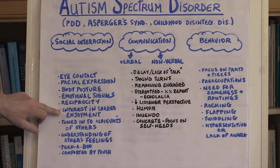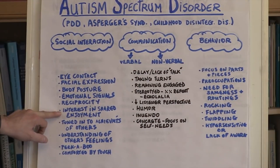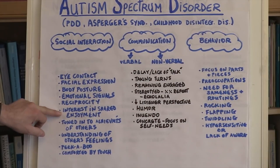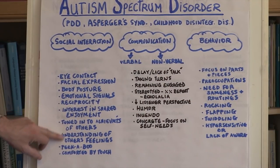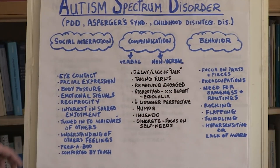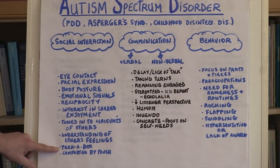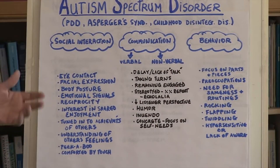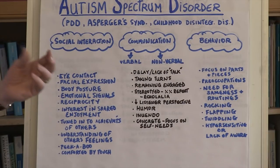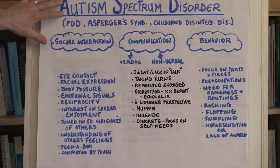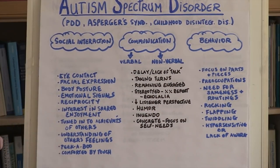Those who have Autism also seem not to have a shared interest in or enjoyment with others. Their experience is a very personal, introspective, solo kind of enjoyment. They are not tuned into the achievements of others and have difficulty understanding other people's feelings. Especially with young children, one of the hallmark early signs of Autism is that they don't engage in social, fun, interactive activities like playing peek-a-boo. Young children with Autism tend not to laugh or smile in those moments, and they're often not comforted by touch, which can be very disconcerting to families, parents, and siblings.